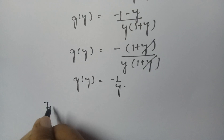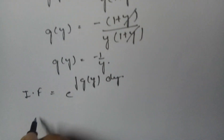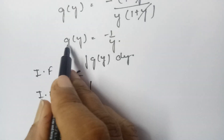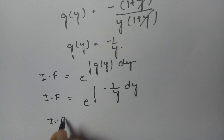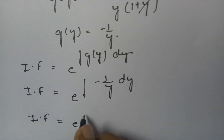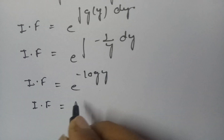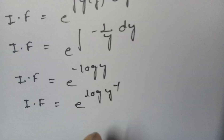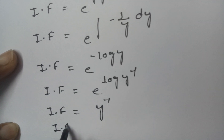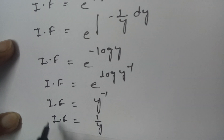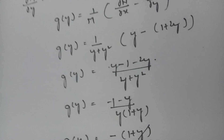The integrating factor is e to the power of integral G(y) dy = e to the power of integral (−1/y) dy = e to the power of −log y = e to the power of log(y⁻¹). Therefore the integrating factor = y⁻¹ = 1/y.